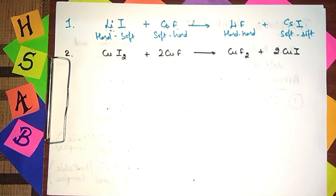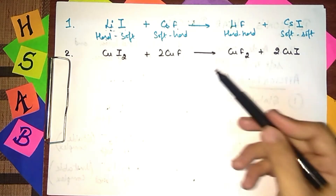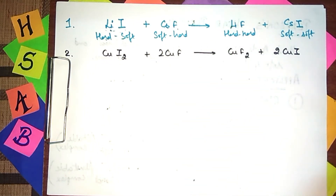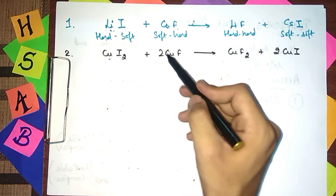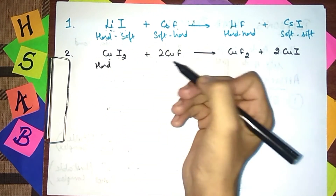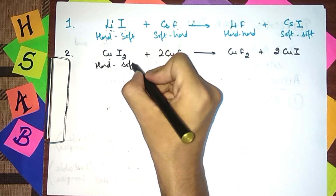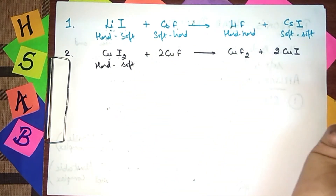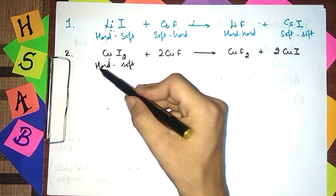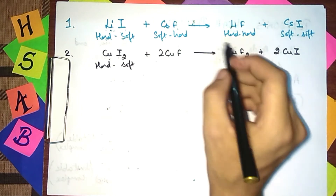Now in the next example, the question asks: will the reverse of this reaction be favored? We check how stable the products are. Copper is a hard ion when it is Cu²⁺, and the other ion is soft — so here we have an unstable product. This means the forward reaction, not the reverse, gives stable products.